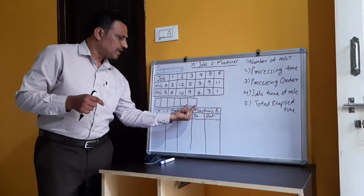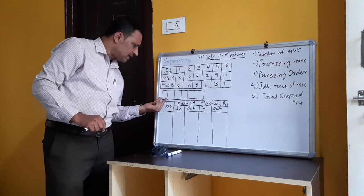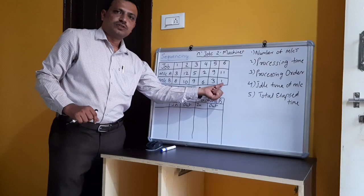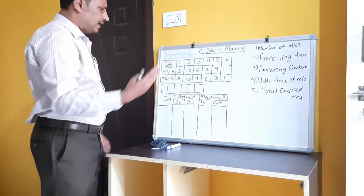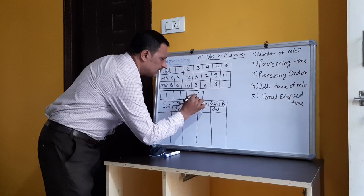If the least processing time is on machine B, place that job at the right side. So since the least processing time (1) is on machine B for job six, we place job six at the rightmost position. We mark job six as placed.